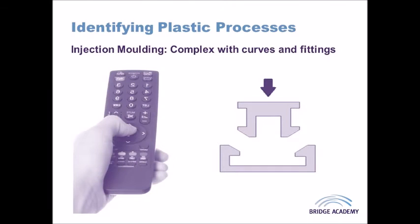Injection molding produces shapes that are usually very complex and three-dimensional, because it's really the only technique you can use to make very complex shapes. You might also find internal curves and fixings for other components, including things like snap fits. A remote control, for example, has a top and bottom that snap together, requiring injection molding for that sort of complexity.